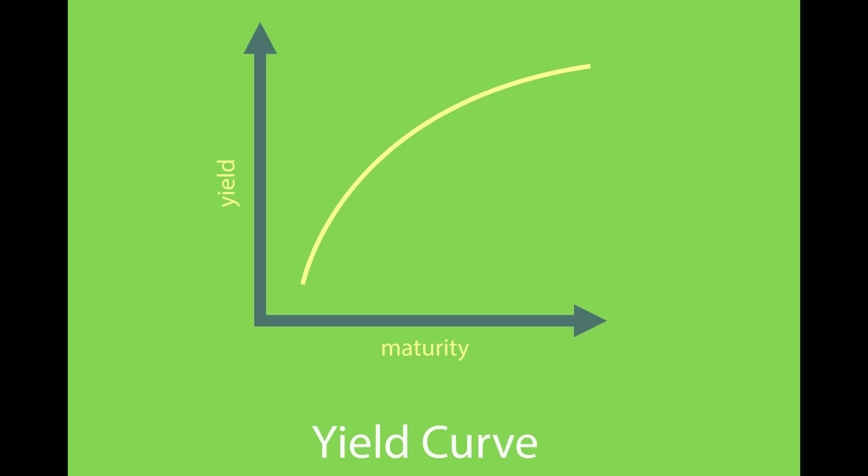A healthy yield curve looks something like this: the further out you go, the longer term that debt instrument is, the higher the interest rate. That makes sense — you would typically want a higher interest rate in exchange for locking up your money for a longer period of time. So the further out on the yield curve you get, the longer the duration of that bond, the higher interest you should earn. That's what a healthy yield curve looks like.